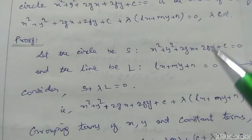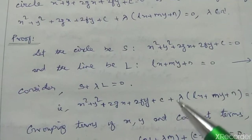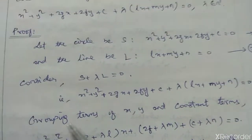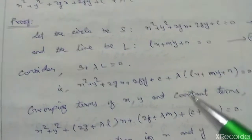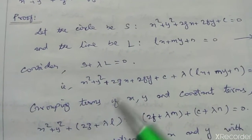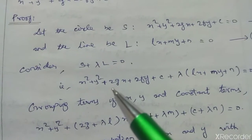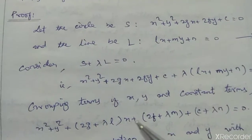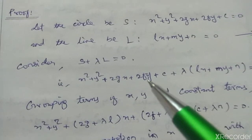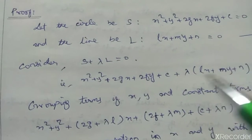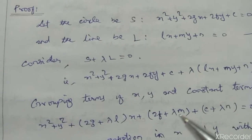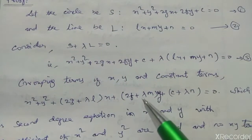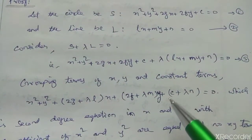Substituting S = x² + y² + 2gx + 2fy + C and L = Lx + My + N, and grouping terms of x, y, and constants: x² + y² + (2g + λL)x + (2f + λM)y + (C + λN) = 0.